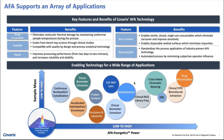You can do a publication search to see how many AFA applications are out there. We see multiple publications coming out almost every week, both on the genomic and proteomic side. AFA's application has been used across a host of different analyte and matrix types, ranging from tissue biomarker extraction, hybridization, enrichment, protein analysis, cell lysis, genomics, metabolomics, and biomarkers.